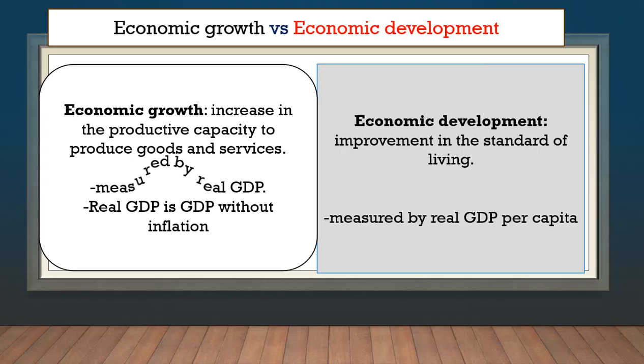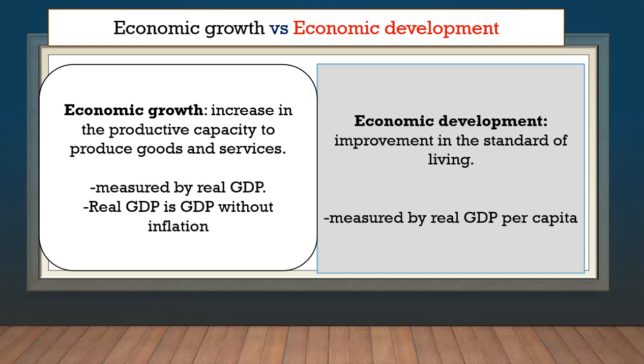Economic growth is measured by real GDP. To get real GDP, we take GDP and subtract inflation. Economic development, on the other hand, is measured by real GDP per capita — per capita means per person. So to measure economic development, we take the real GDP and divide it by the population in the country to see what the real GDP is per person.